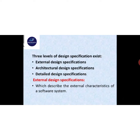Three levels of design specification exist. One: external design specification. Two: architectural design specification. Three: detailed design specification. External design specification describes the external characteristics of a software system — meaning the outside appearance and physical appearance of the software design.